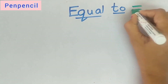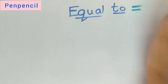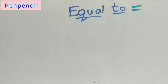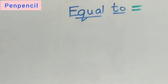What is meant by equal to? For example, we take a name Ramu. Ramu is having 5 chocolates. Radha is also having 5 chocolates. Then we say Ramu and Radha both are having the same number of chocolates. That means equal — equal number of chocolates.